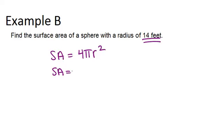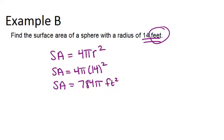So the surface area will be 4π times 14². So 14² is 196, and then when we multiply that by 4, we get 784π. And our units should be feet squared because we were given feet in this problem and surface area is always square units.